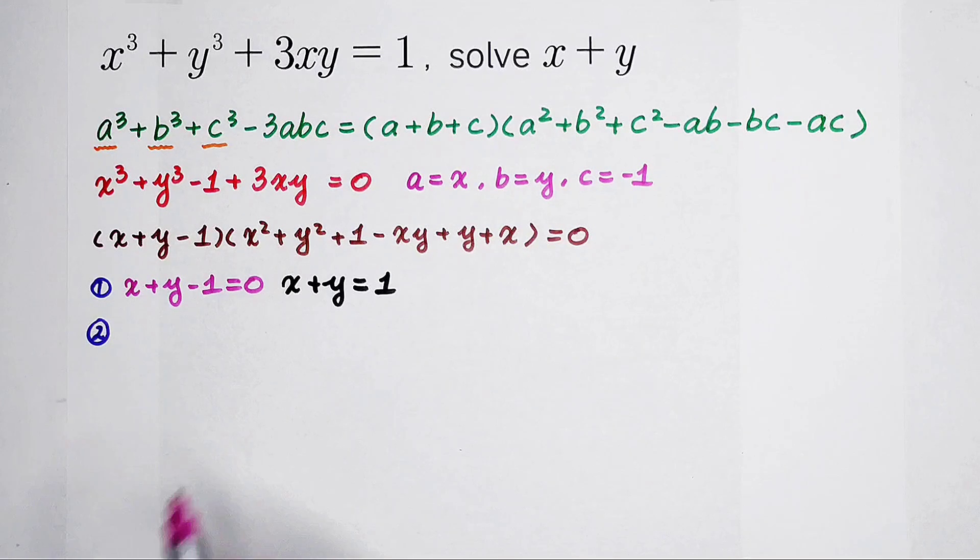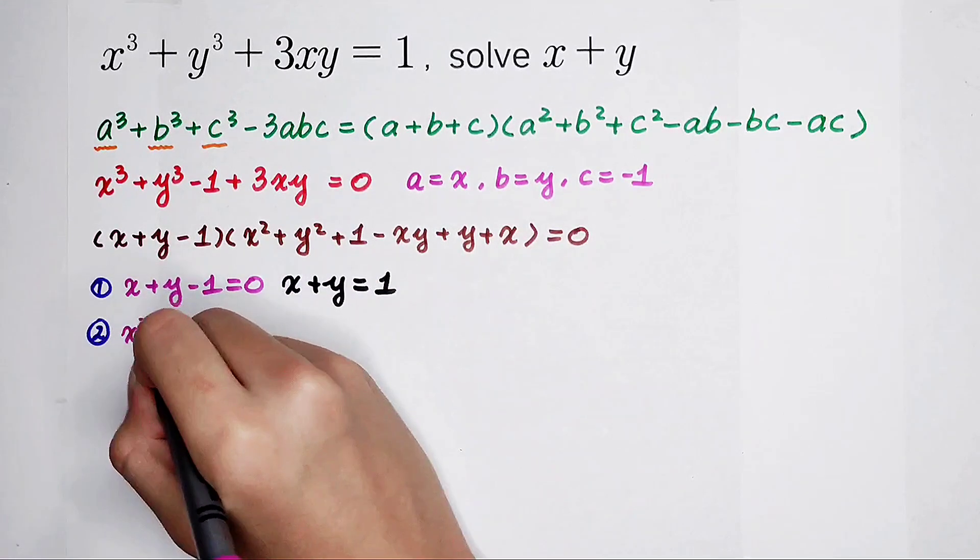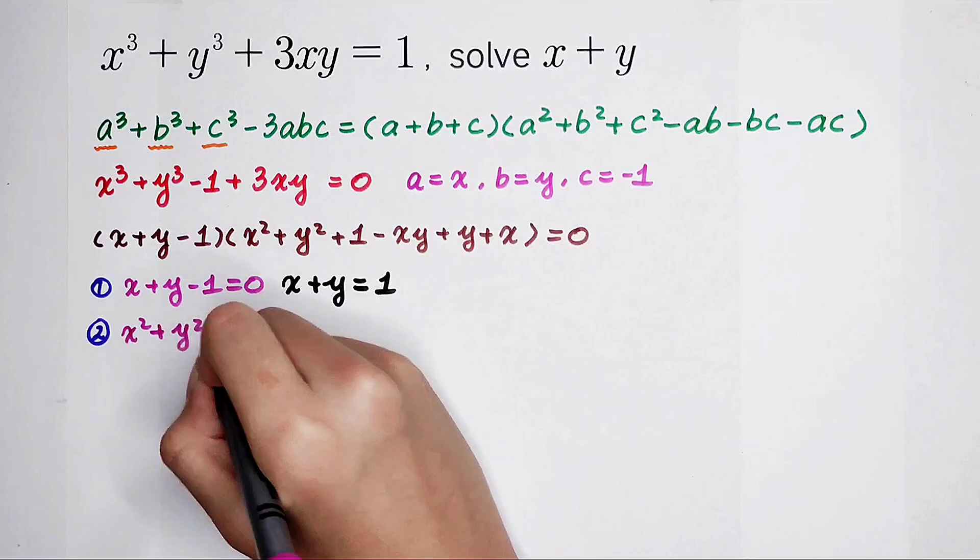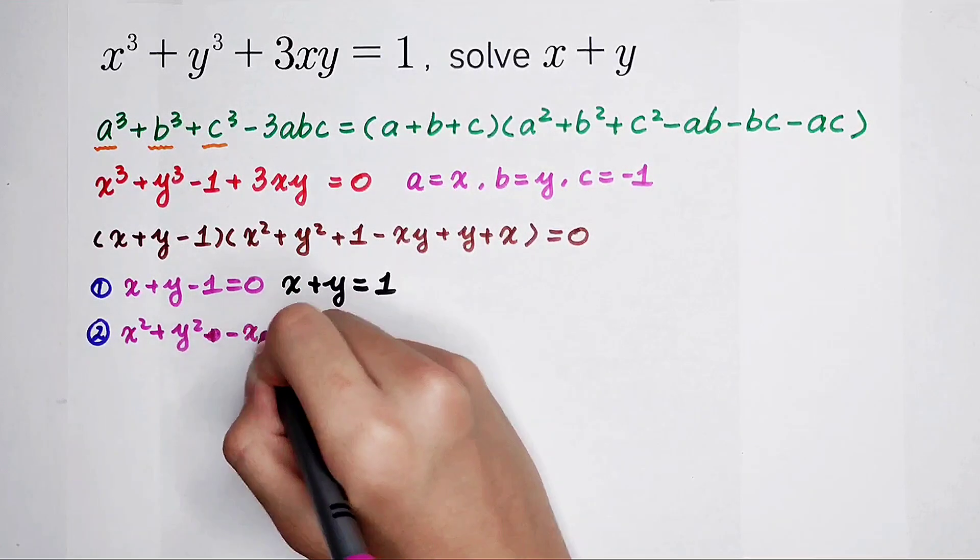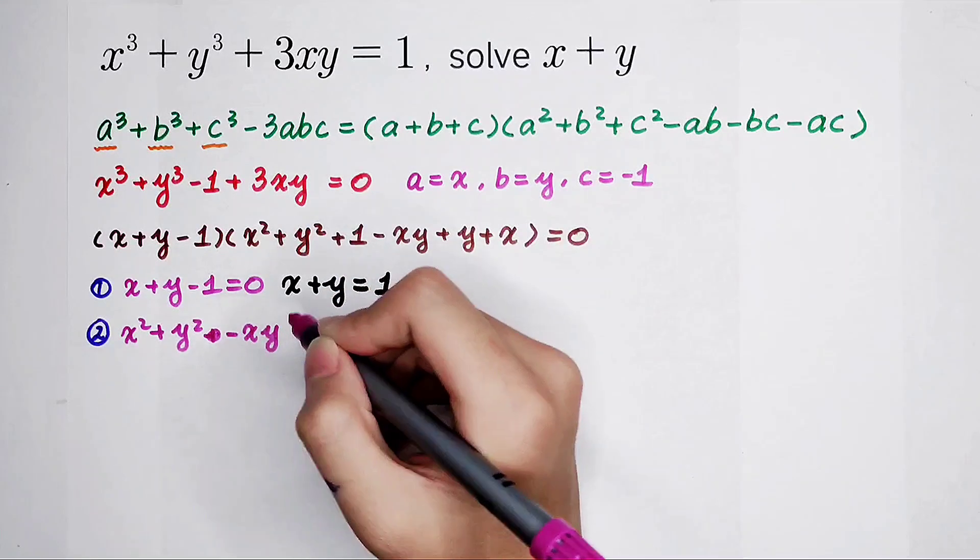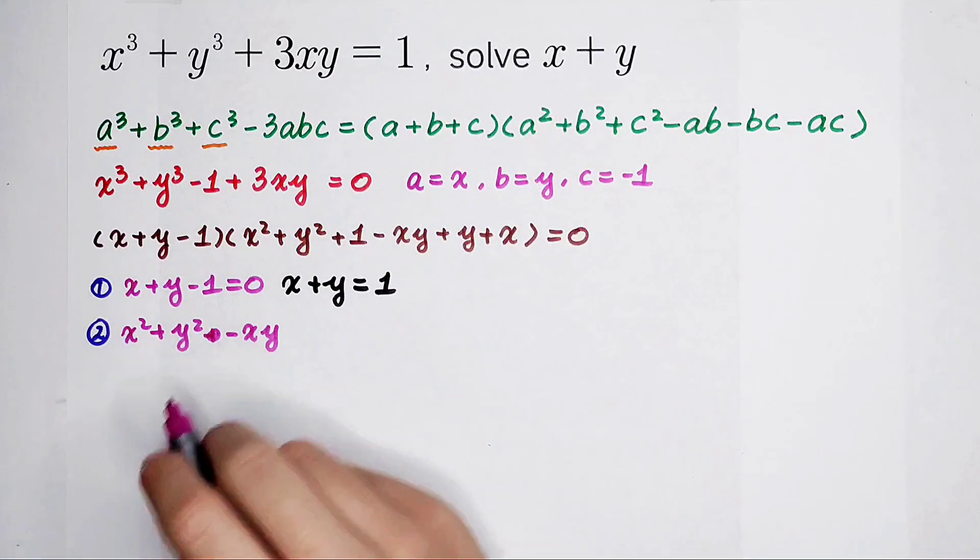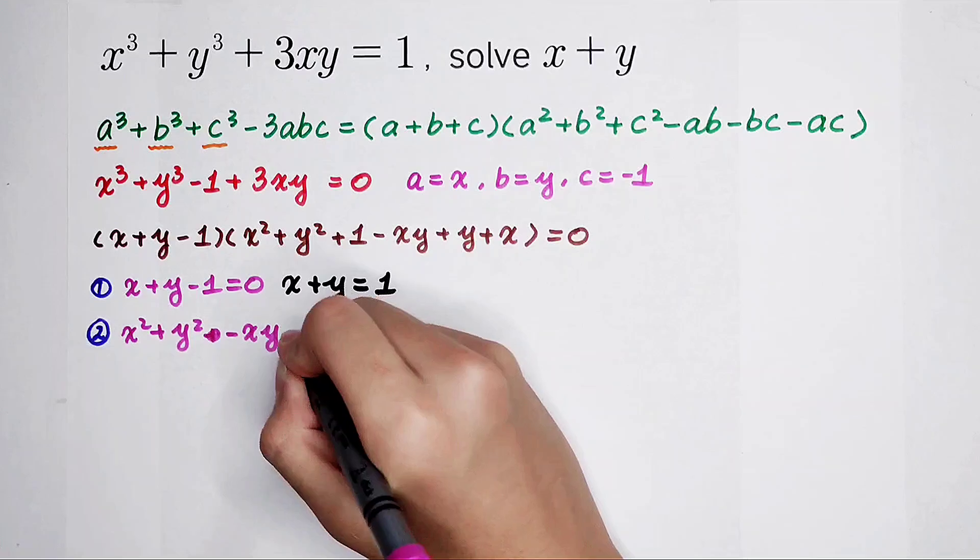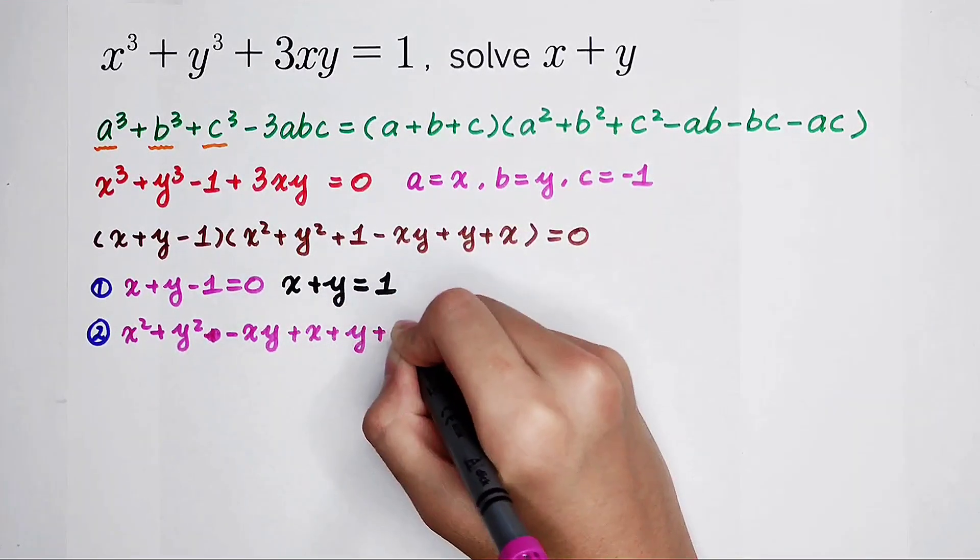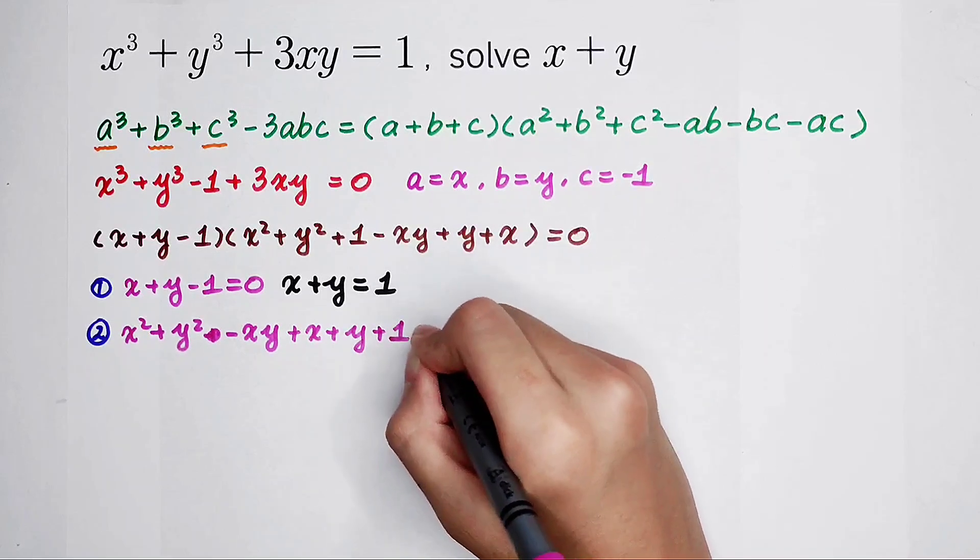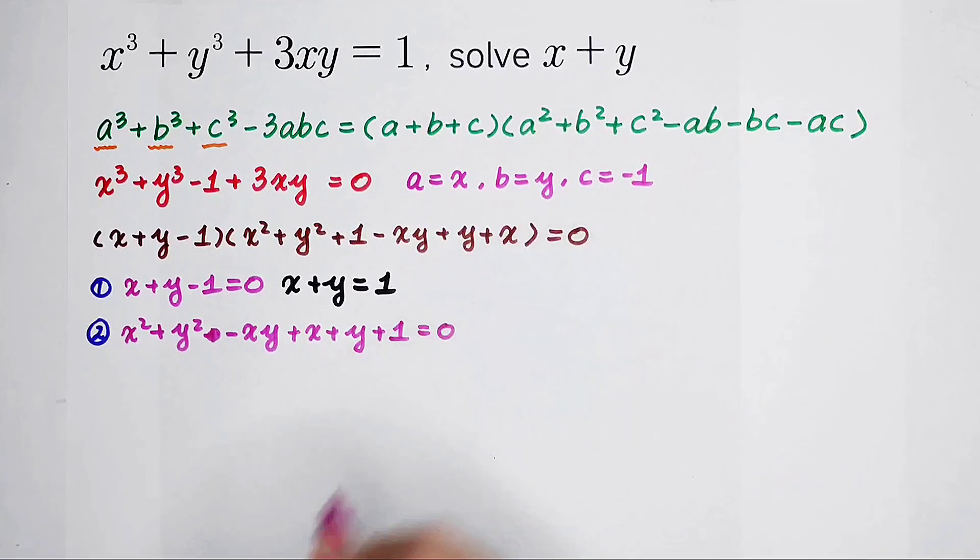The second case, it's a little complicated. x squared plus y squared, and I will write negative xy first, because there are some secrets. x squared plus x plus y, I will write this plus 1 at last. This is equal to 0.